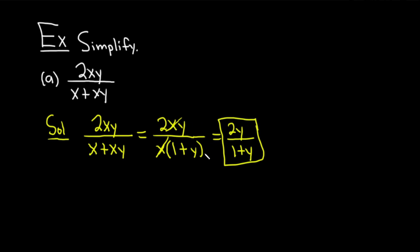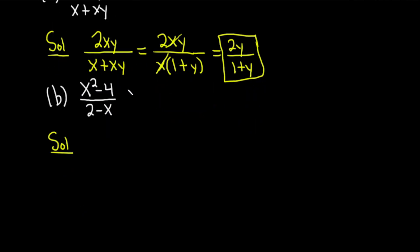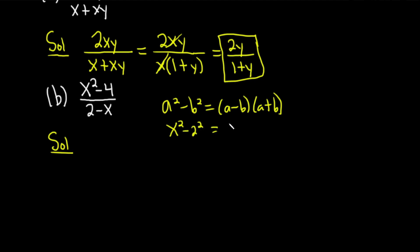Let's do another one. Part B, we have x squared minus 4, all divided by 2 minus x. Right away you can see that in the numerator you have the difference of squares. Recall, if you have a squared minus b squared, that's equal to a minus b times a plus b. In this example, x squared minus 4 is x squared minus 2 squared, so that factors as x minus 2 times x plus 2. So I'll write the numerator as x minus 2 times x plus 2, and in the denominator we still have 2 minus x.